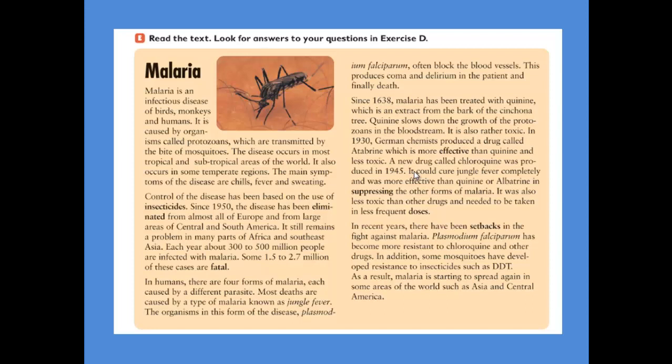Let's read the text carefully. Malaria is an infectious disease of birds, monkeys, and humans. It is caused by organisms called protozoans, which are transmitted by the bite of mosquitoes. The disease occurs in most tropical and subtropical areas of the world; it also occurs in some temperate regions. The main symptoms of the disease are chills, fever, and sweating. Control of the disease has been based on the use of insecticides.